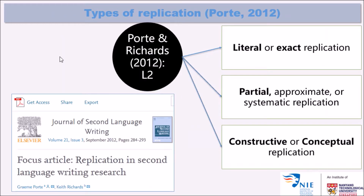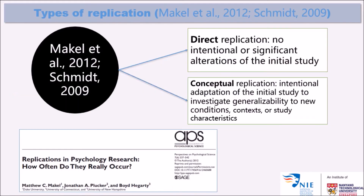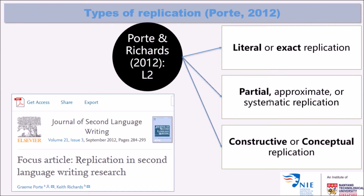Another way of looking at replication research has been proposed by Port and Richards, and it's more applicable to second language research. It is very similar to the two previous frameworks. They divide replication into three categories, one of which is literal or exact replication — as with Meichel and colleagues' direct replication, there is no intentional or significant alteration.